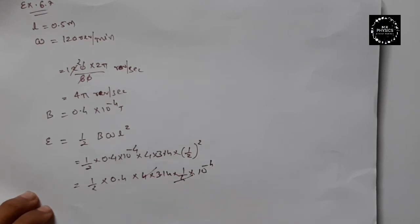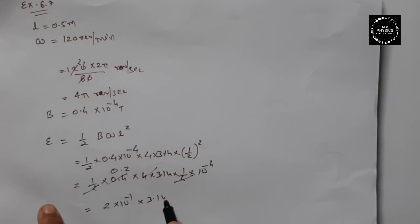The 4s will cancel out. Cancel this to get 0.2, so 0.2 and 10 raised to minus 4. We can write 2 into 10 raised to minus 1, and 3.14. Multiply these two: 6.28 into 10 raised to minus 5 volt is the answer. Simple.